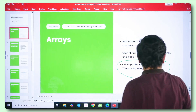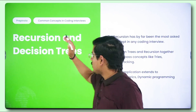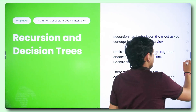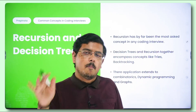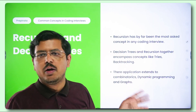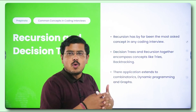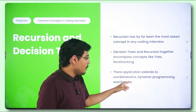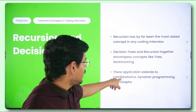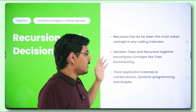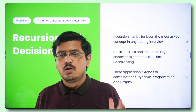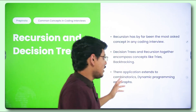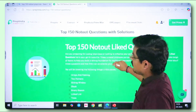Beyond arrays there is recursion and decision trees. Recursion is the most asked concept in the last 10 years — nobody leaves any DSA interview round without recursion. 90% of the time recursion will be somewhere in your interview. Decision trees and recursion go hand in hand and together encompass tries, backtracking, and combinatorics.